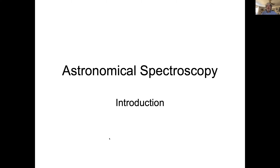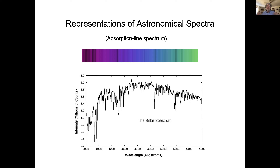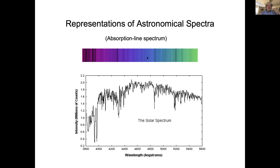Going out and looking through a spectrograph — you take the light, split it up into its colors. If you looked with your eye at the light coming out of the spectrograph from a star like the sun, you might see something like this: the light spread out into colors, but you'll notice some very specific colors are missing. There are dark lines in the spectrum where colors are absent. We call that an absorption spectrum, or an absorption line spectrum.